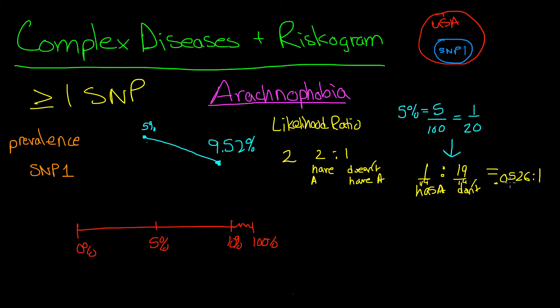We're still not to that 9.52%. What we need to do now is take this ratio and multiply it by the likelihood ratio. This is our prevalence, and now we're going to take into account SNP1. We have 0.0526, we're going to multiply that by the likelihood ratio, which is 2. Prevalence ratio times likelihood ratio gives us 0.1052.